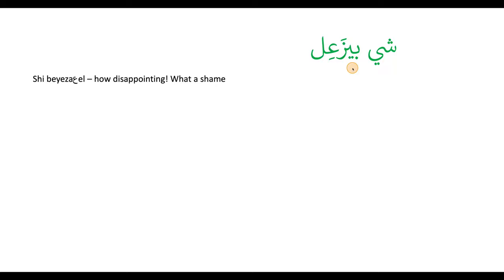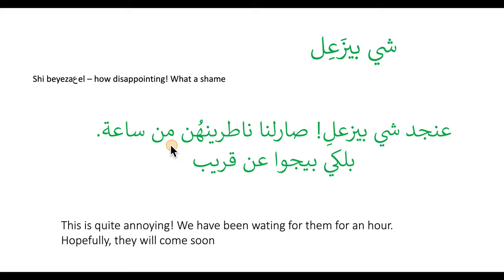Our next phrase is 'shi biza'al.' This means this is upsetting or something that upsets me. Shi means something, biza'al means it upsets me — so what an upsetting thing to hear or see, meaning what a shame. Example: Anjad, shi biza'al — sar lna natrin hon min sa'a, balke biju han arib. Honestly, this is quite upsetting — we've been waiting for them for an hour, hopefully they'll come soon.